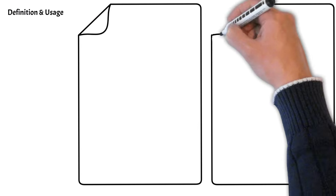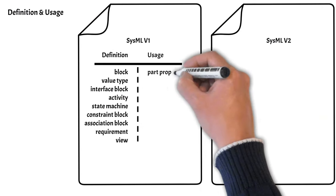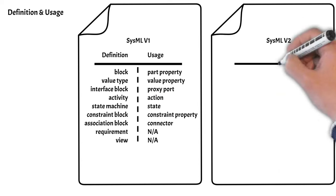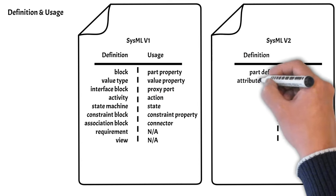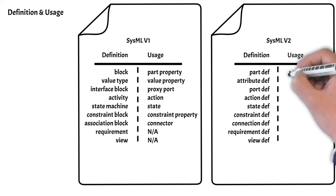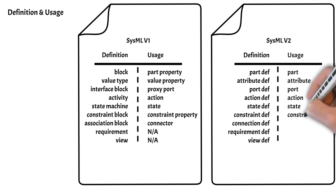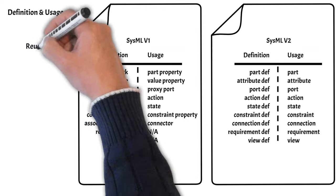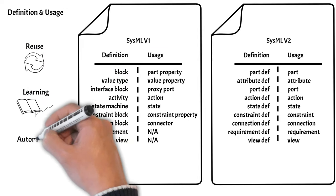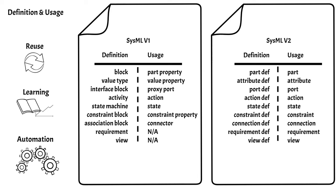Now let's compare some terminology updates between SysMLv1 and SysMLv2 regarding elements of definition and elements of usage. SysMLv2 makes an effort to simplify the terminology by using the term 'def', which is short for definition. The advantages to these updates include enabling effective reuse, facilitating learning and using the language, and enabling automation.